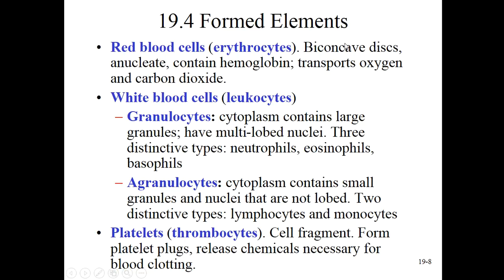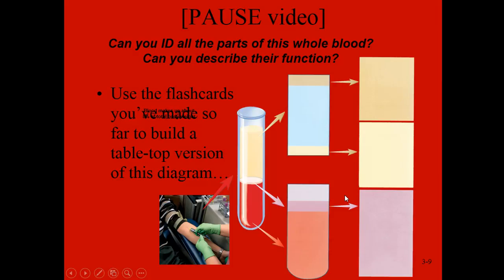Erythrocytes — red blood cells — are bi-concave discs, shaped sort of like a bagel. They don't have a nucleus. They contain a very important oxygen-carrying compound called hemoglobin, and they transport oxygen and a tiny bit of carbon dioxide — though most CO₂ is in the plasma. White blood cells are primarily for immunity and allergy; they either contain granules or they don't, and we'll talk about the specific types in a moment.